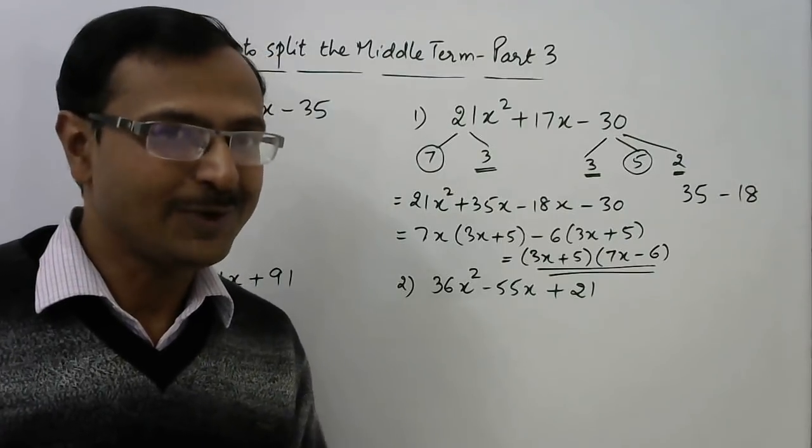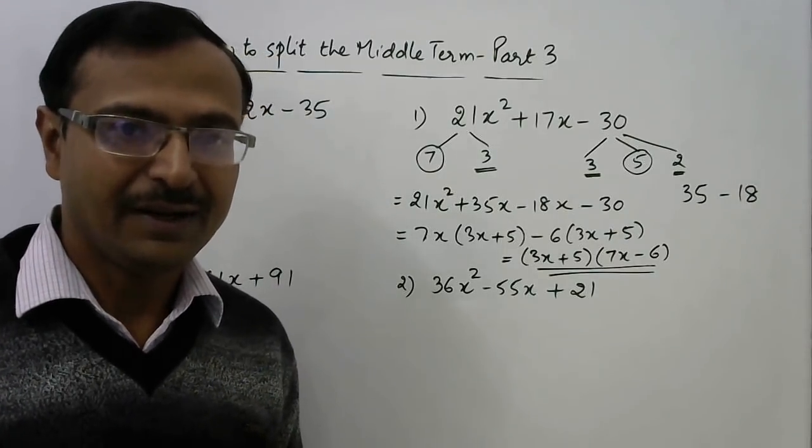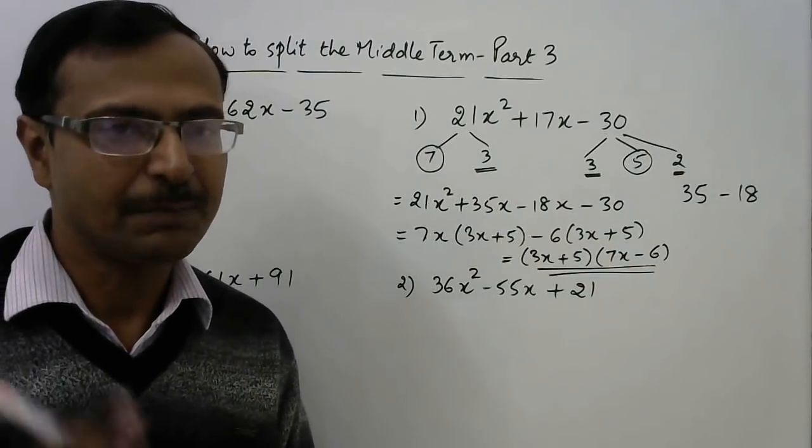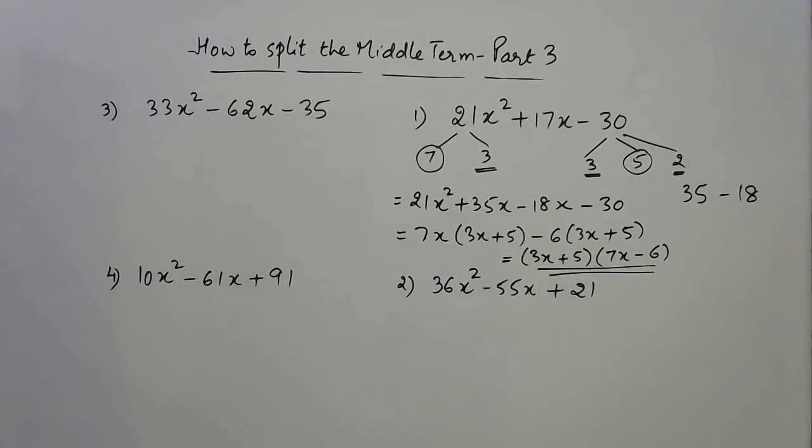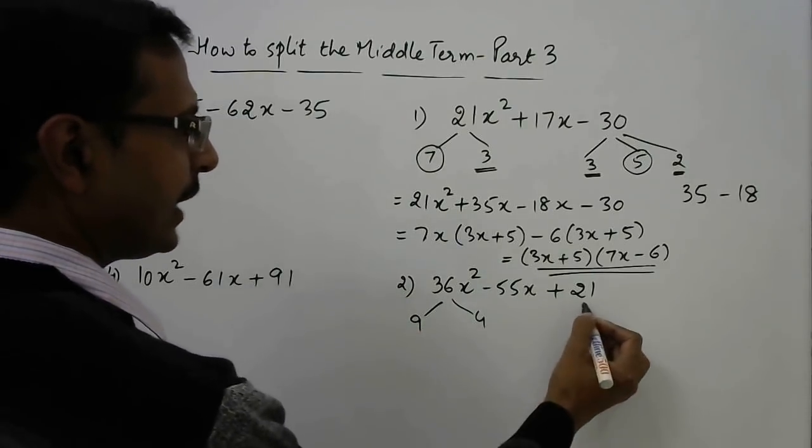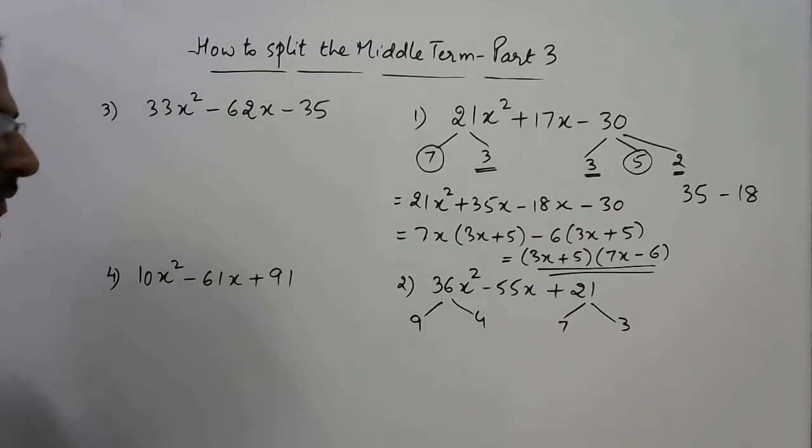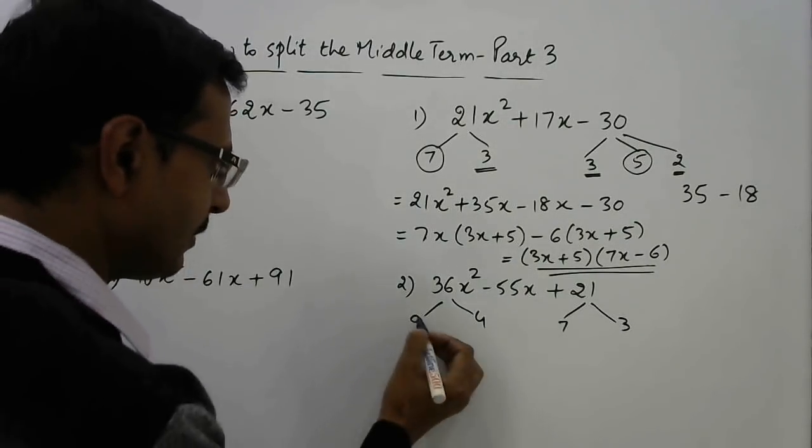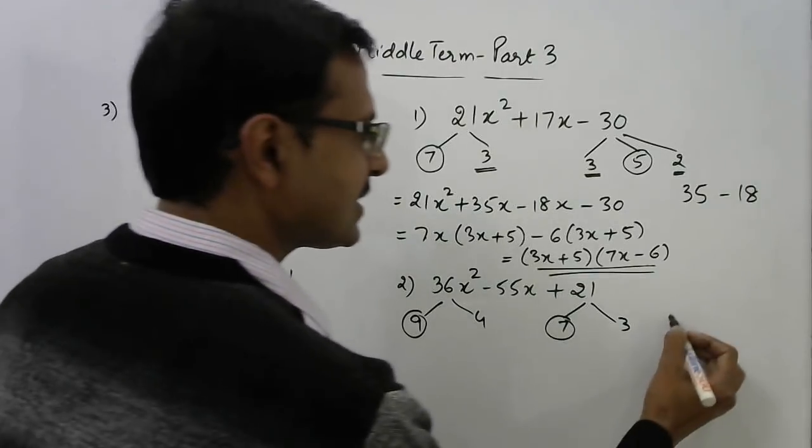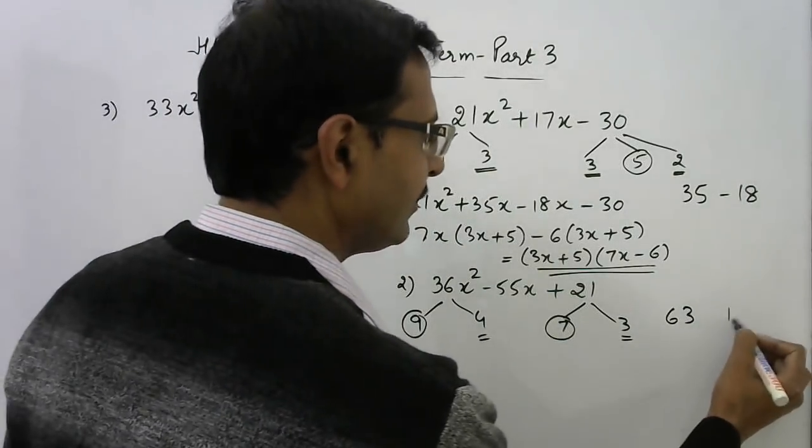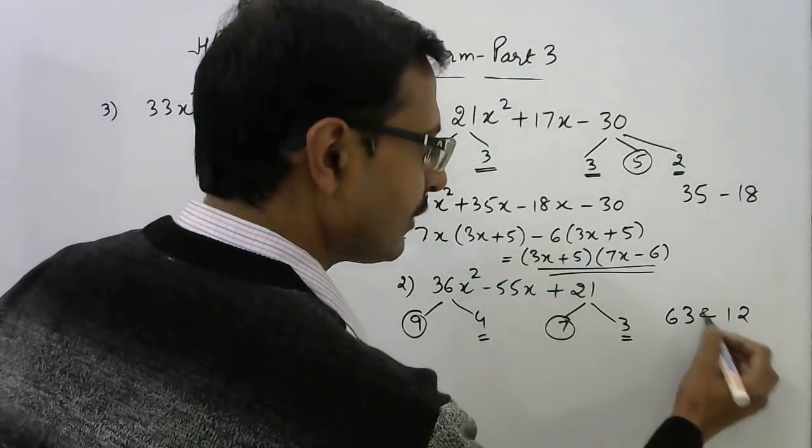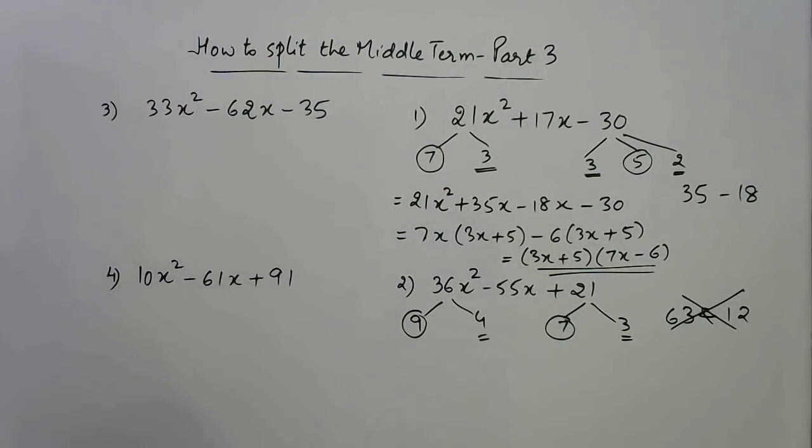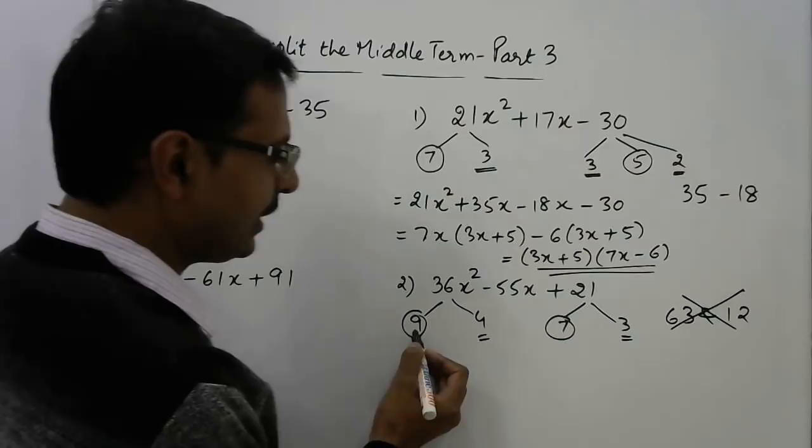It has to be because you have observed the previous videos and learnt that method. So if you have not seen it please see the previous two parts also. Now see here this is 36 and 21. Now let us try and factorize this. See 36 is 9 into 4 and this is 7 into 3. Now if I take the largest numbers 9 and 7, 9 sevens are 63 and 4 threes are 12 then their difference is 51 and the sum is 75. So it is not solving my purpose.